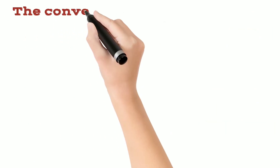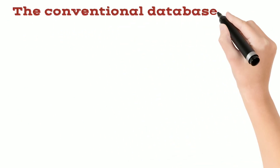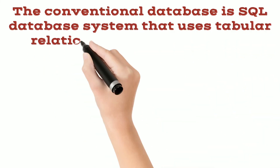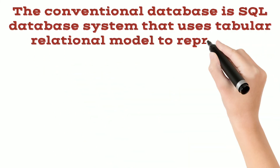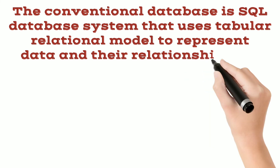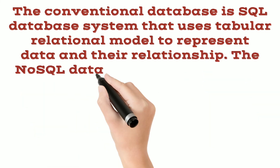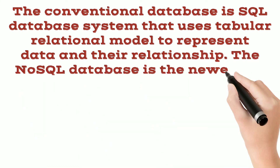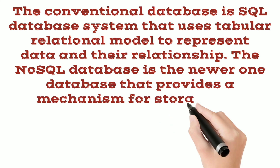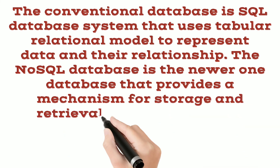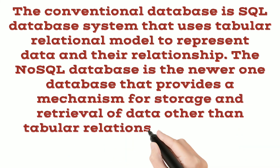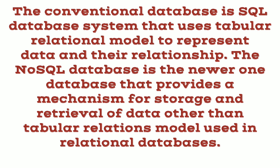The conventional database is the SQL database system that uses a tabular relational model to represent data and their relationships. The NoSQL database is the newer one that provides a mechanism for storage and retrieval of data other than the tabular relations model used in relational databases.